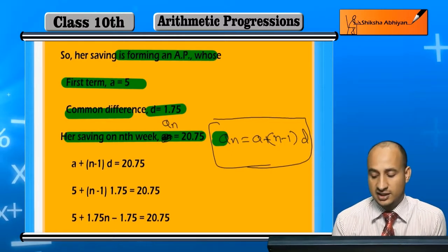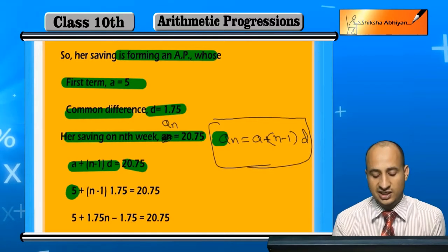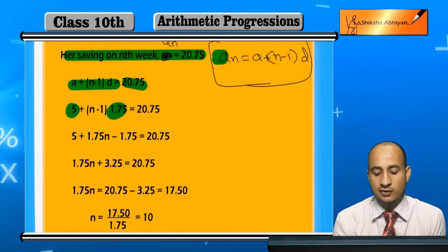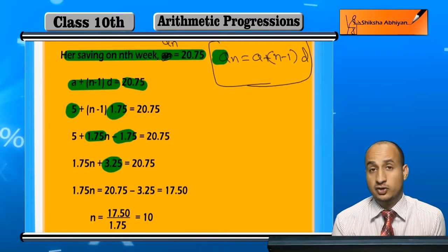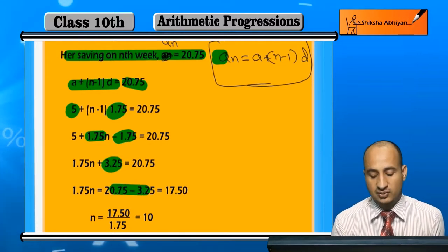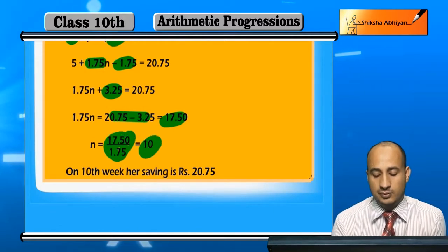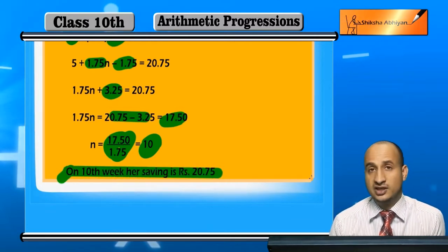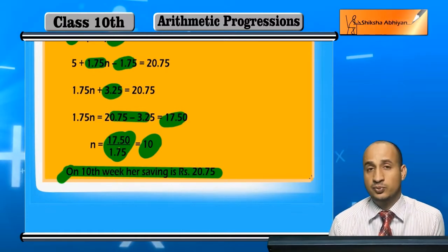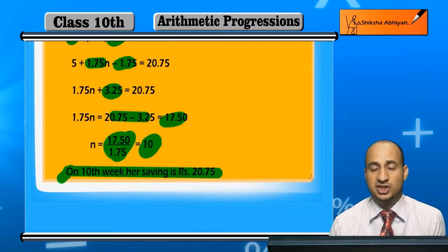Now students, according to this formula, the nth term value is 20.75. Put the values of a and d into the formula: 20.75 equals 5 plus (n minus 1) times 1.75. Solving: 20.75 minus 5 plus 1.75 gives 17.5, and dividing 17.5 by 1.75 gives n equals 10. That means Raam Kali's saving reaches 20.75 in the 10th week. Now students, let's do one more word problem based on arithmetic progression.